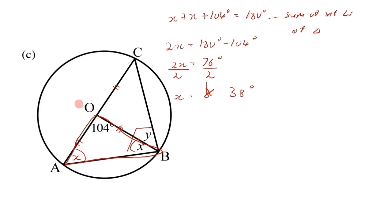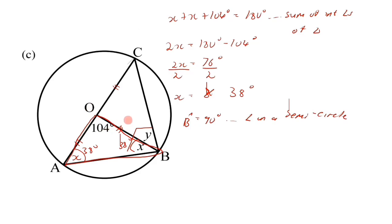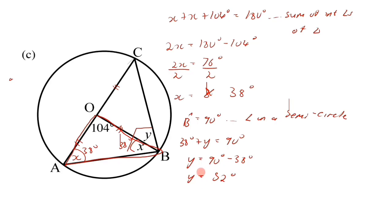Now that x equals 38 degrees, we fill in 38 degrees for both base angles. Since AOC is a diameter, angle B equals 90 degrees — reason: 'angle on a semicircle'. We now have 38 degrees plus y equals 90 degrees, so y equals 90 minus 38 degrees, giving y equals 52 degrees. We now have both the values of x and y.